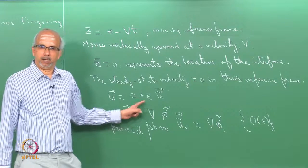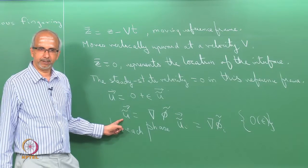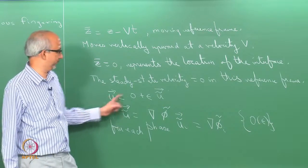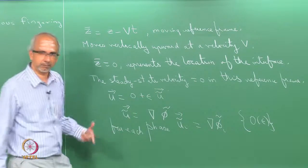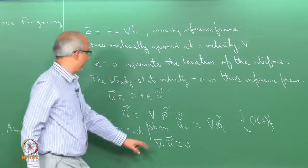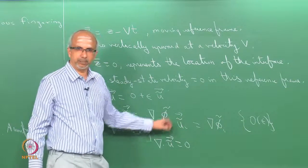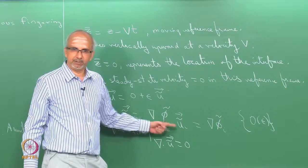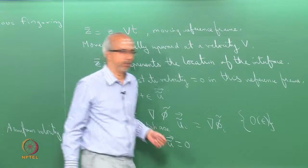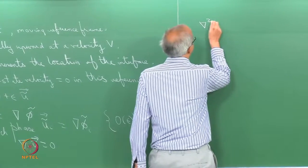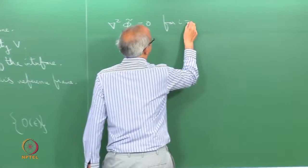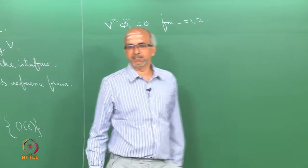The perturbed velocity ũ must satisfy the continuity equation, so ∇·ũ = 0 at order epsilon. Combining with ũ_i = ∇φ̃_i, we get ∇²φ̃_i = 0 for i = 1, 2. This is the linearized equation — a Laplace equation for each phase's perturbed potential.